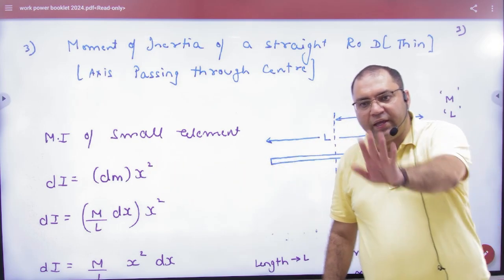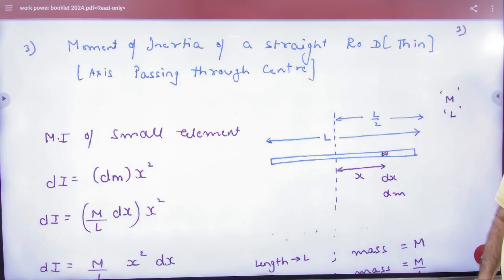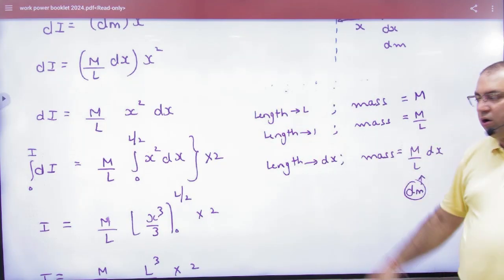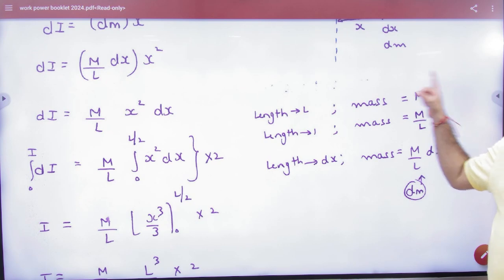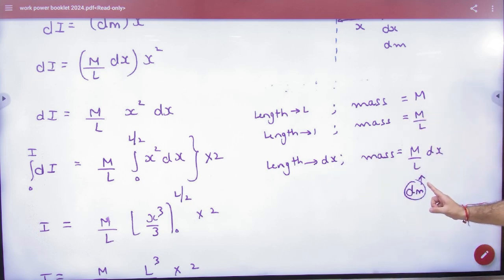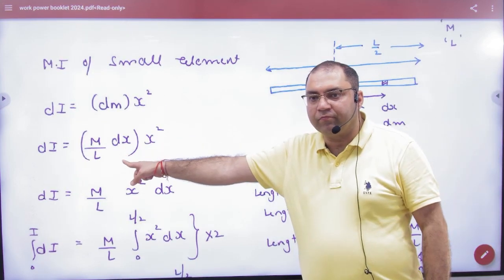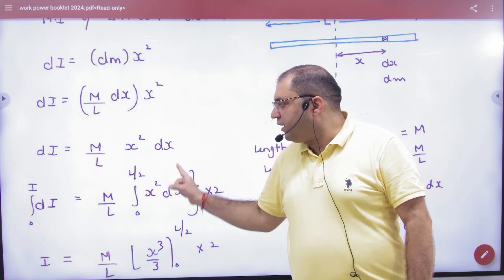How to find dm value? This small mass, how to calculate? Because the rod's mass is lengthwise distributed. If rod's length is l and mass is m, then it's m by l. And if dx, then m by l into dx. So small mass dm came out. So dm value is m by l into dx. Put this here - this small mass put here, and x square.